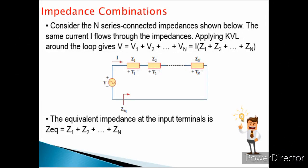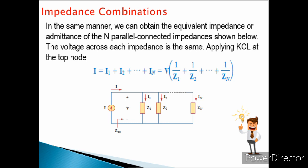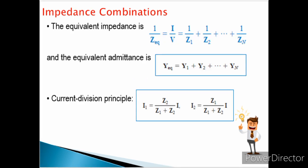For series-connected impedances, the total impedance equals the sum of all impedances. The current is I = V/(Z1 + Z2), with voltage division: V1 = Z1/(Z1 + Z2) × V and V2 = Z2/(Z1 + Z2) × V. For parallel combinations, the equivalent impedance is 1/Z_eq = 1/Z1 + 1/Z2 + ..., with current division: I1 = Z2/(Z1 + Z2) × I and I2 = Z1/(Z1 + Z2) × I.